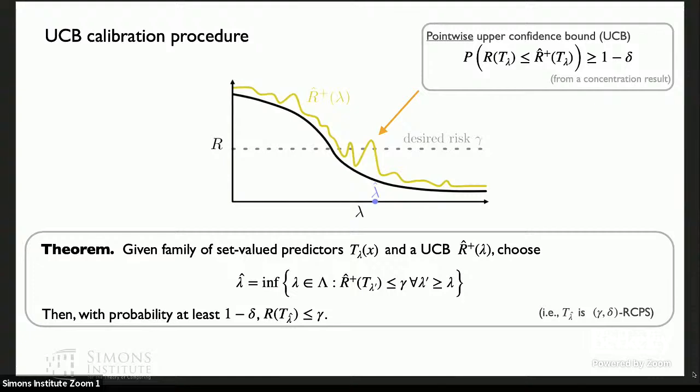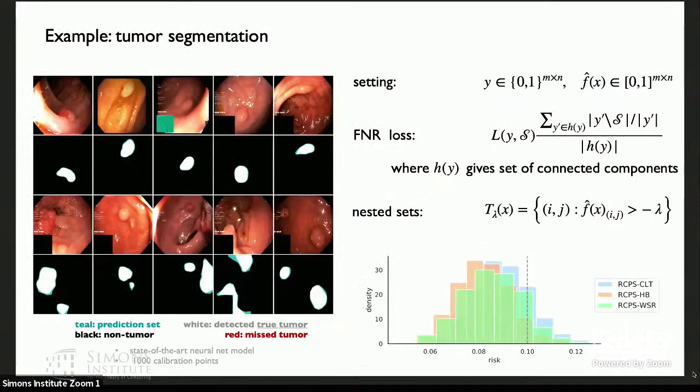And the property that it satisfies is it's an upper bound with probability one minus delta. I'll note that it's only a point-wise upper bound. So it's a pretty weak property. I'm not demanding that the whole curve is an upper bound. It's just a point-wise upper bound. And so you can get this from data from various concentration results, including Hoeffding's inequality or more modern variants that are sharper. So this is where it comes from. The procedure is pretty simple. You just look at your upper confidence bound, which again came from some data, and then you stop at your desired risk level gamma.